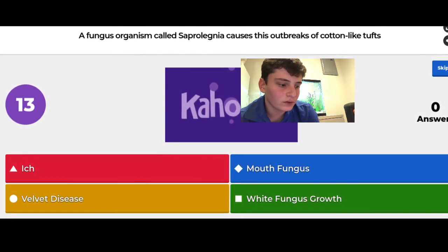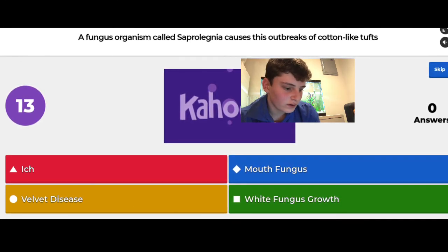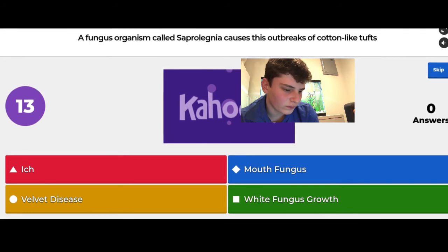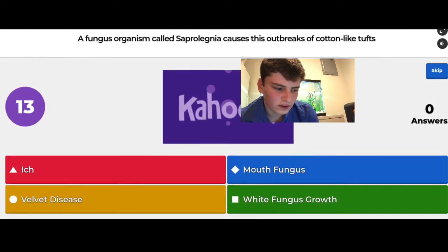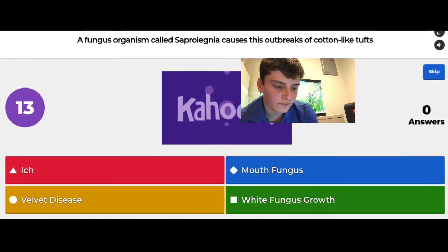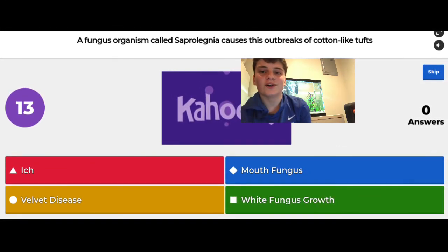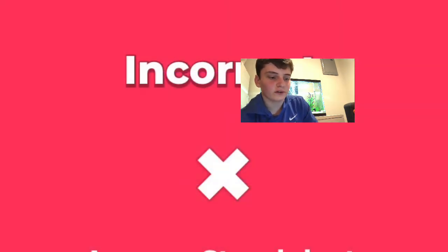A fungus organism called Saprolegnia causes outbreaks of cotton-like tufts. I guessed between white fungus growth and mouth fungus, and went with mouth fungus — but it was white fungus growth. I don't really know the difference. The options were mouth fungus, white fungus growth, velvet disease, and ick.